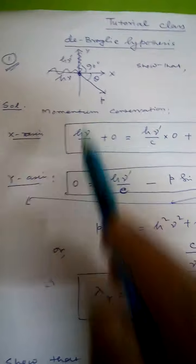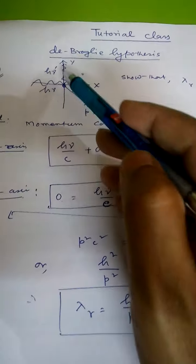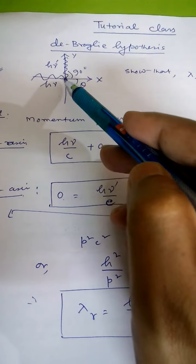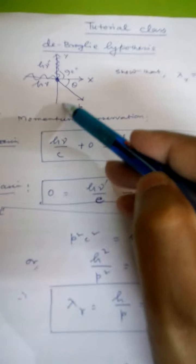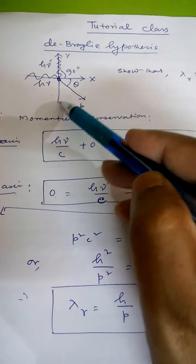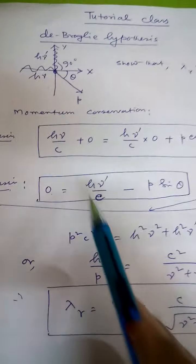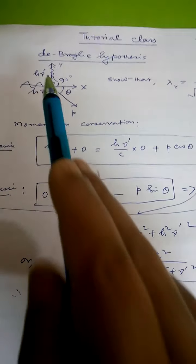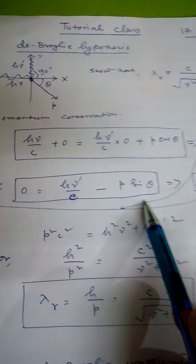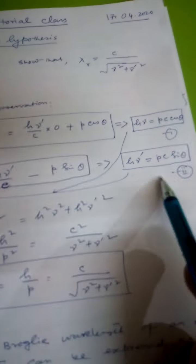Similarly, considering conservation of momentum along the Y-axis: before collision, the net momentum is zero along the Y-axis. After collision, h*nu_prime/C is the momentum of the scattered photon, and minus P*sin(theta) is the component of the recoil electron along the negative Y-axis. This expression takes the form h*nu_prime = P*c*sin(theta) — let this be equation 2.